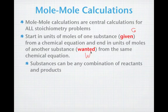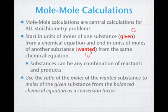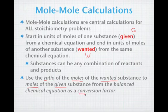Substances can be any combination of reactants and products: reactant compared to reactant, reactant compared to product, product compared to reactant, or two products compared to each other. What we're going to do is use the ratio of the moles of the wanted substance to the moles of the given substance from the balanced chemical equation, and that ratio goes into our familiar conversion factors from dimensional analysis.